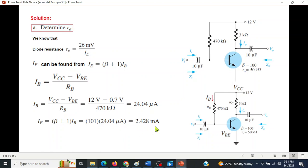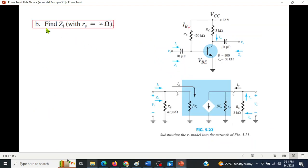Therefore I_E = (β + 1)I_B. Beta is given here, beta is 100, so (100 + 1) × 24.04 = 2.428 milliamperes is the emitter current I_E. Now r_e, plugging in this value of the current, r_e = 10.71 ohms. This is part a.